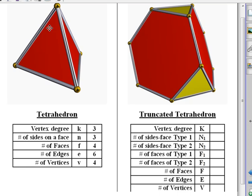The number of sides on the face is three because it's made up of triangles. There are four faces, there are six edges, and there are four vertices.